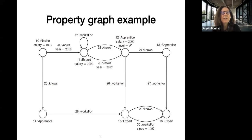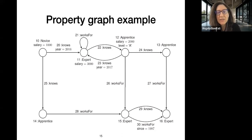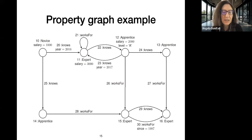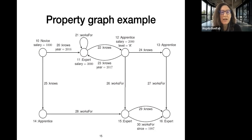Edges also have identifiers and labels — you can have multiple labels on edges and nodes in property graphs. For example, edge 20 between nodes 10 and 11 represents a relationship that has existed since 2016.